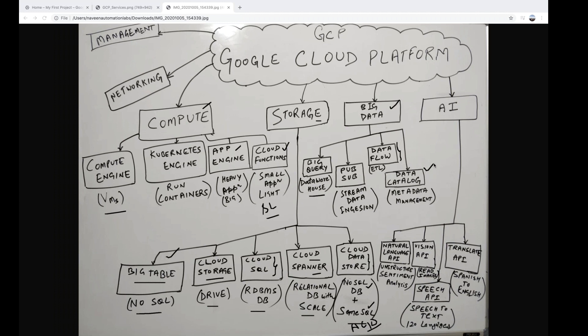Data Catalog is a metadata management service where you can manage what type of metadata you are using in your system. According to the documentation, you can use it for metadata management and to manage the type of data flowing through the system.